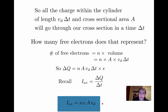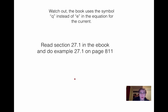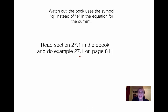That's the key equation. We can use it to calculate the drift speed, for example. One note: in the book, they sometimes use q instead of e in the equation for the current — when you see their q, they mean e, the elementary charge. Now read section 27.1 in the e-book and do example 27.1 on page 811 as practice. That's not an assignment, just do it for practice. Thank you.